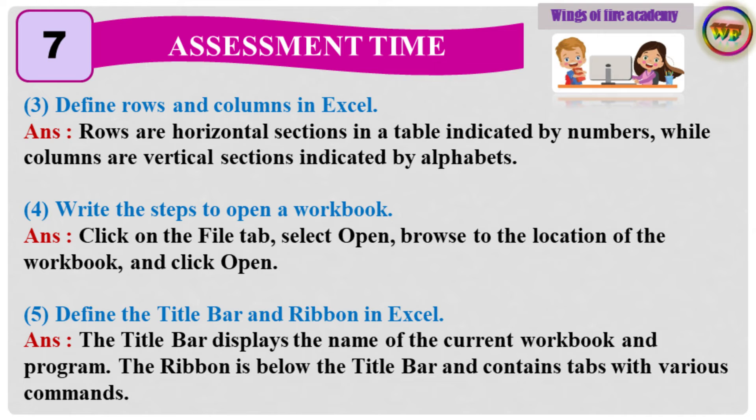Question 3: Define rows and columns in Excel. Answer: Rows are horizontal sections in a table indicated by numbers, while columns are vertical sections indicated by alphabets. Question 4: Write the steps to open a workbook. Answer: Click on the File tab, select Open, browse to the location of the workbook, and click Open.